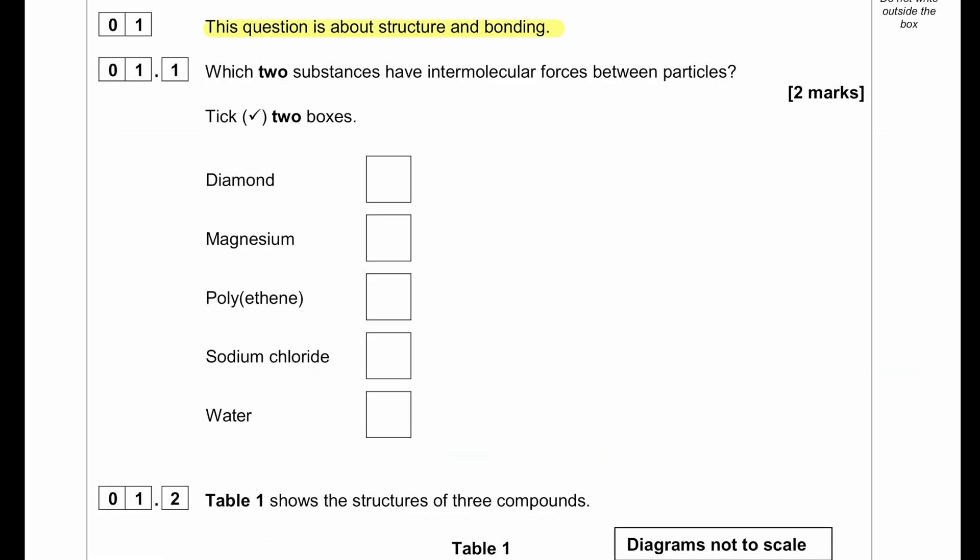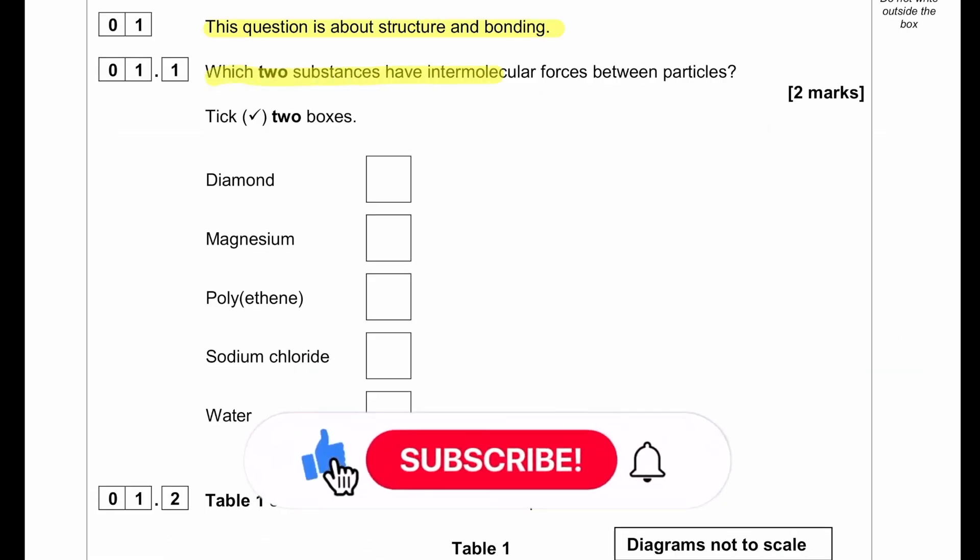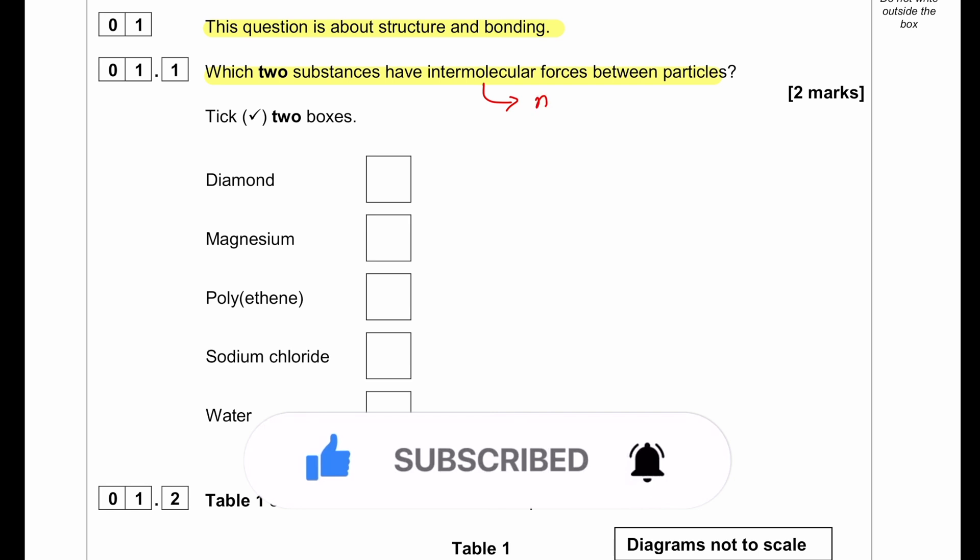This question is about structure and bonding - two substances have intermolecular forces between particles. Intermolecular force exists between molecules. Diamond is macromolecular, magnesium is metallic, and sodium chloride is ionic. All three are giant structures, whereas polythene and water are molecular substances. They will have intermolecular forces between them.